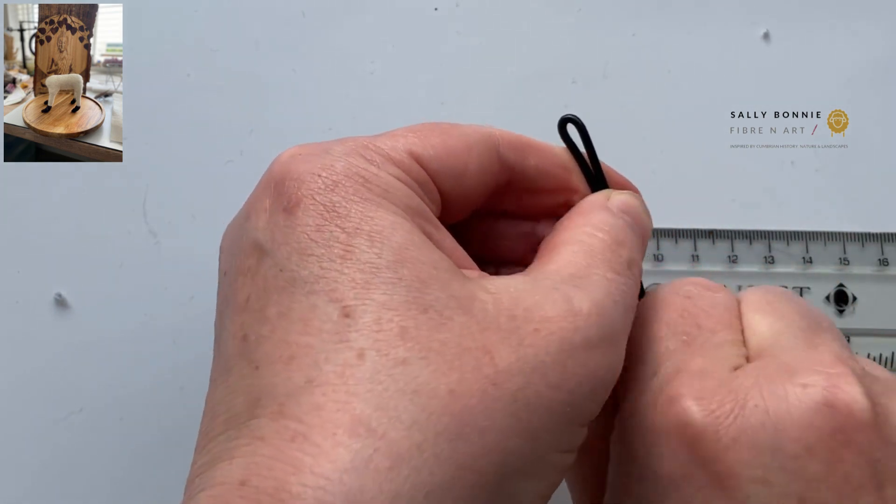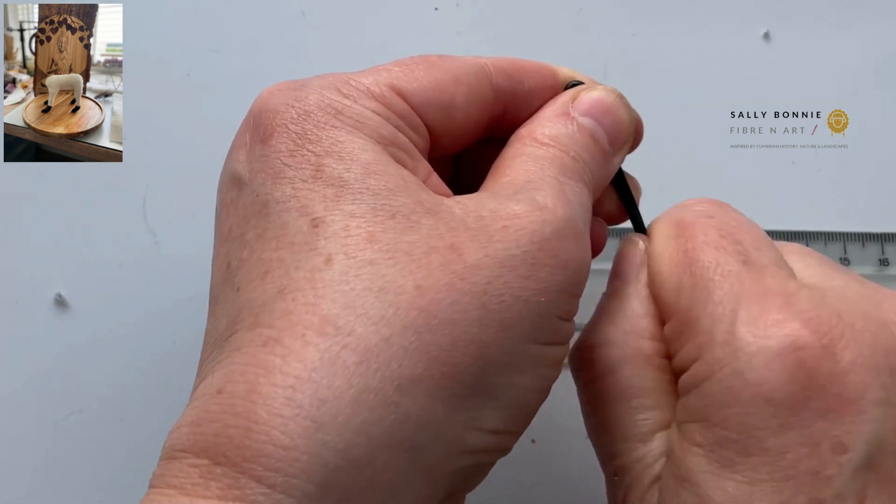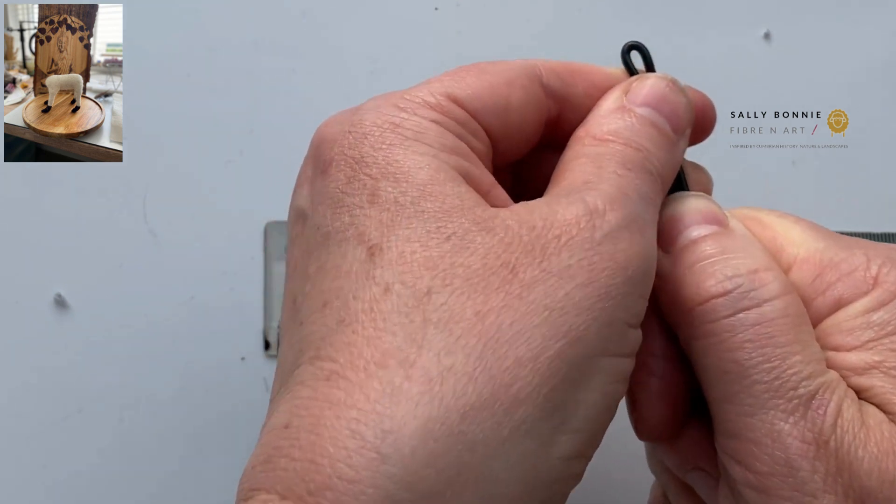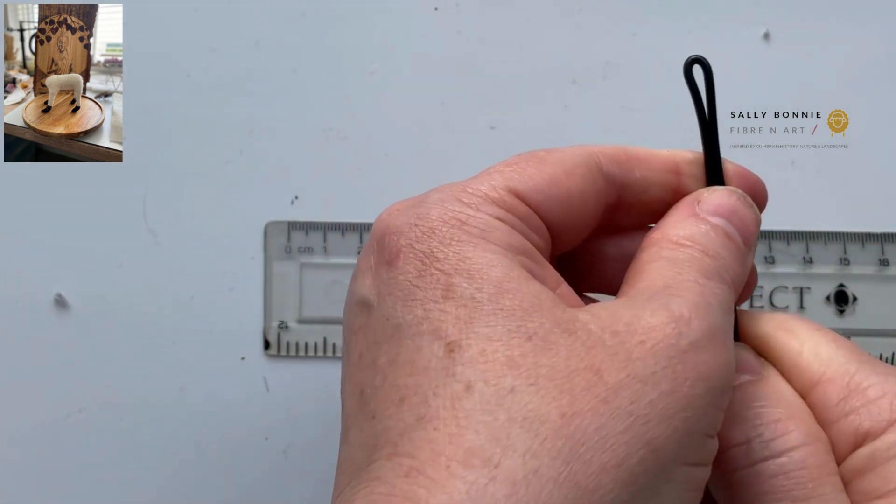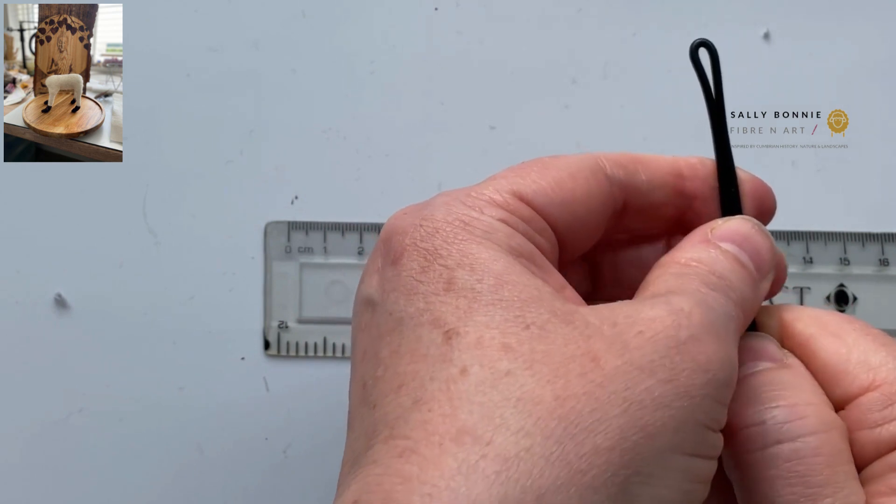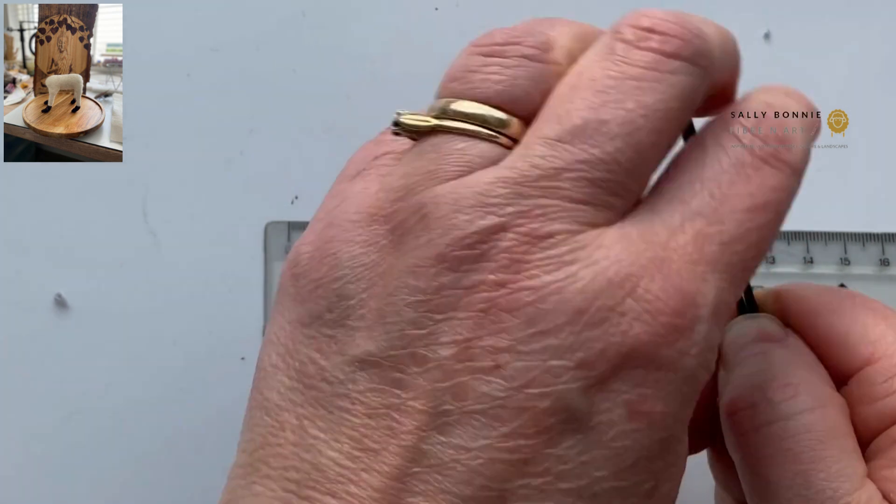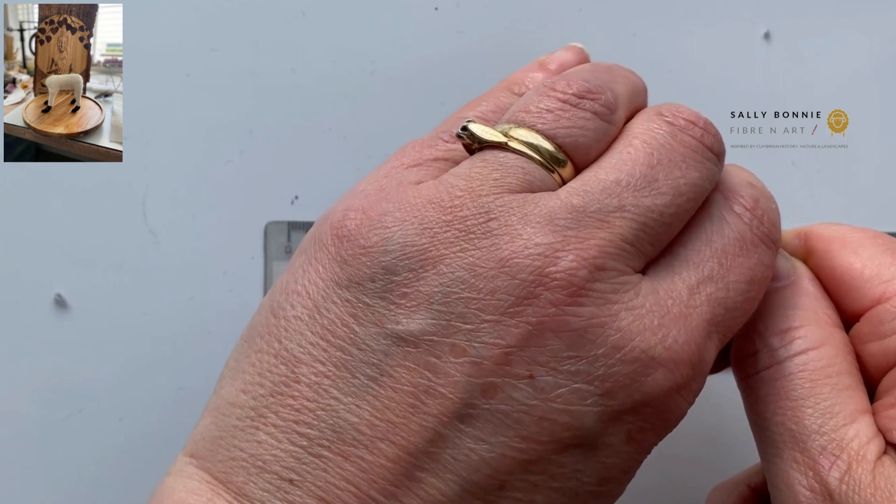So I'll just gently squeeze that together. So you can see by that. Just straighten that out. So that's going to be a leg, and then we're going to continue along the wire and we're going to make an arch to the next leg.